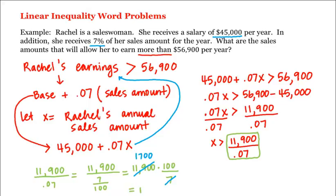Therefore, this equals 170,000. Putting that back in, as long as X, which is Rachel's annual sales amount, is larger than $170,000, she'll be earning more than $56,900 per year.